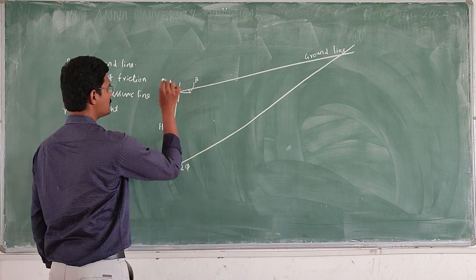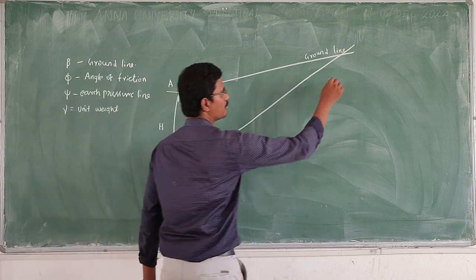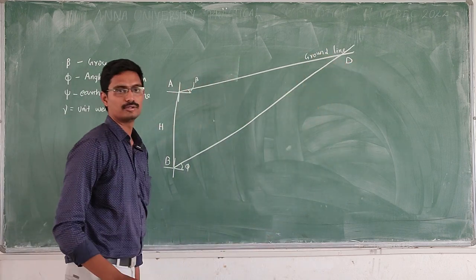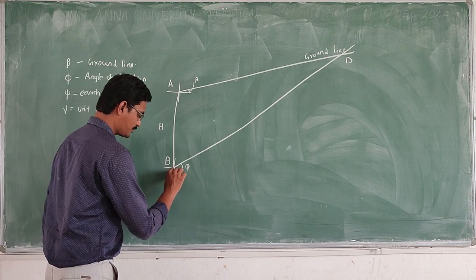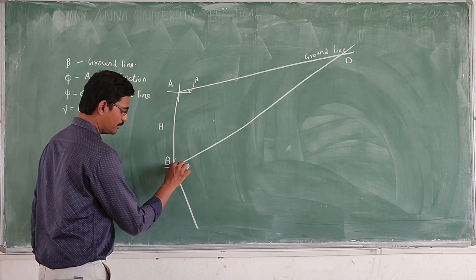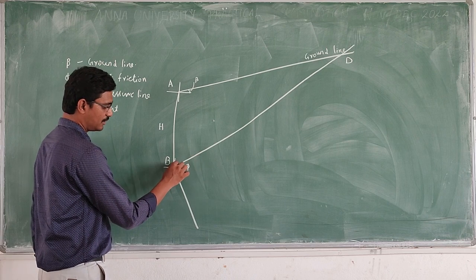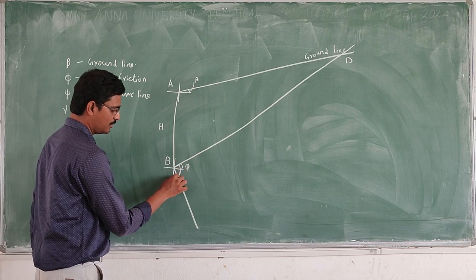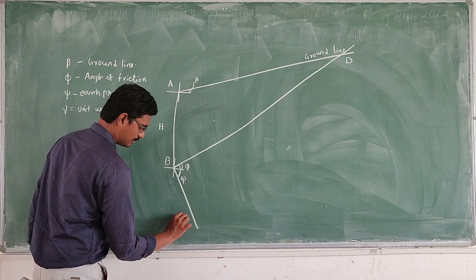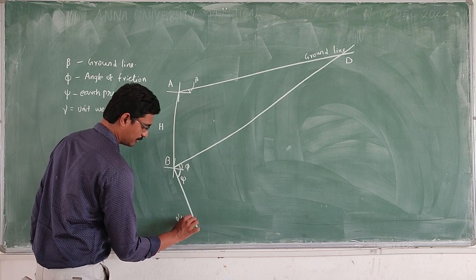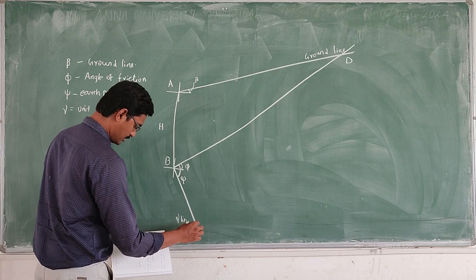We take this point as A, this one as B, and this one as D. After that, we can draw the psi line from BD. With BD as the base, we draw the psi line. We take this intersection point as H.